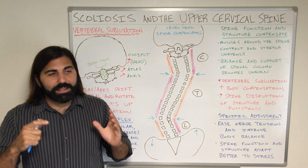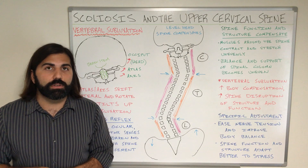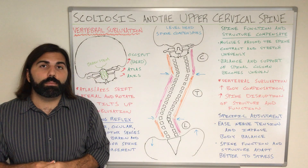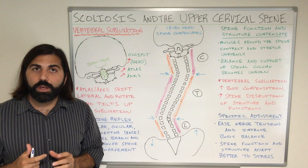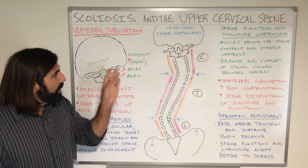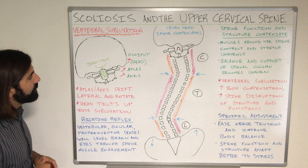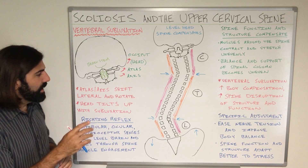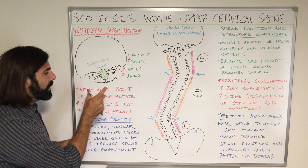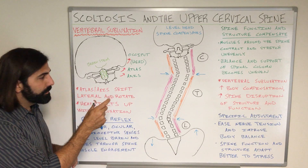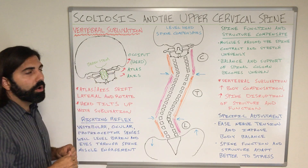If our body can't adapt to a physical, chemical, or emotional stress as best it can, it's going to create a compensation. A compensation that occurs at the brainstem level is what we call a vertebral subluxation — a physical presentation of an abnormal compensation. In my schematic drawing here I drew a simple version of a vertebral subluxation. When we have a subluxation, the atlas and/or the axis bone are going to shift laterally left and right and also rotate left and right. In this case the atlas and axis bone are shifting and laterally rotating over to the right.